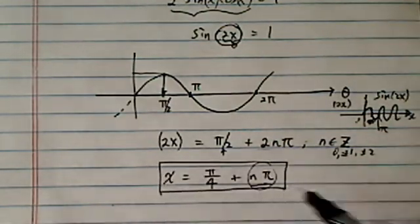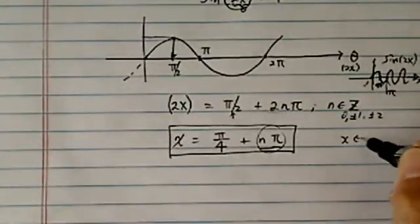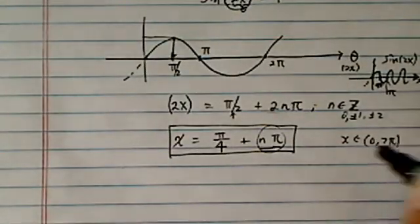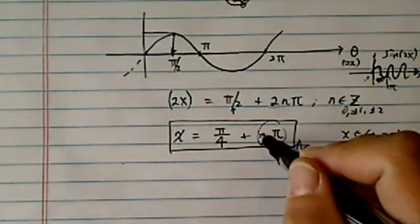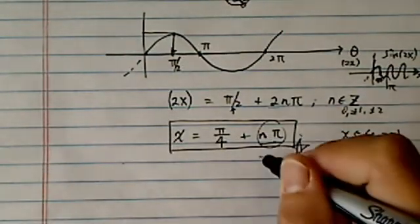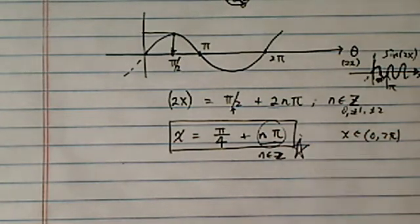Anyway, unless your teacher asks specifically for x belongs to 0 to 2 pi, leave it in a general form. Okay, where n here belongs to the natural numbers.